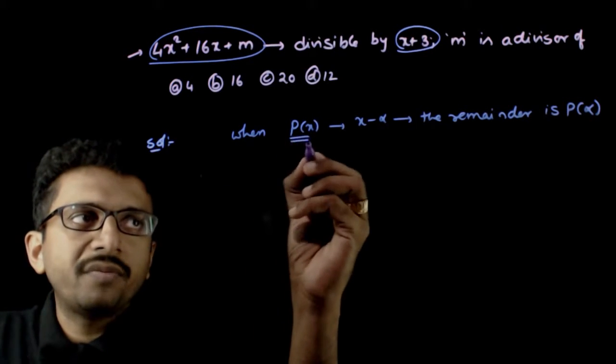Because x plus 3 can be written as x minus negative 3. So this implies 4 times minus 3 whole squared plus 16 times minus 3 plus m is equal to zero.